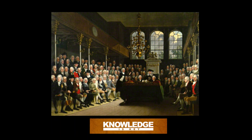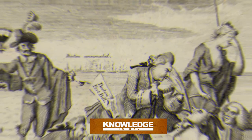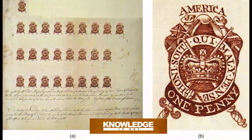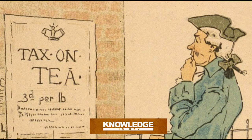The British government had imposed a series of policies and regulations, such as the Quartering Acts, the Stamp Act, and the Tea Act, that were seen as intrusive and unjust.